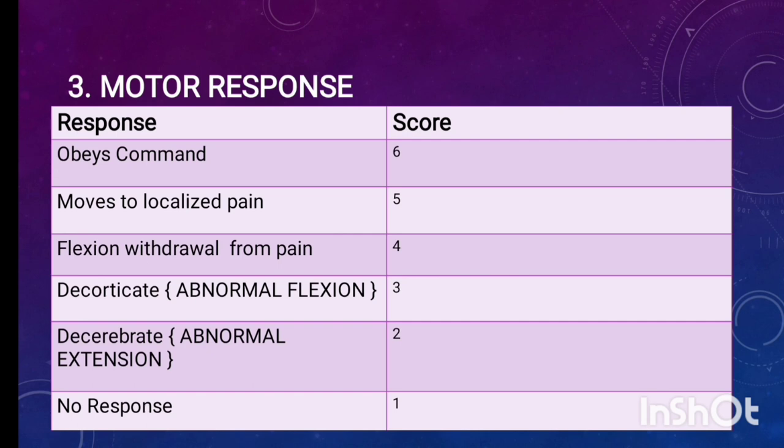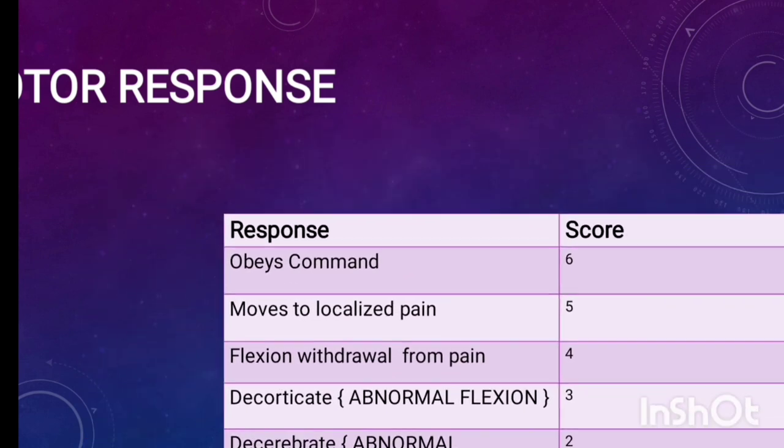The next one is abnormal extension and the scoring is 2. It is also known as decerebrate posturing and this is the worst case scenario and bad prognostic finding can be seen in ICU patients. Then the next one is no response and the scoring is 1. If we do all the other activities and there is no response, we can give this score 1.